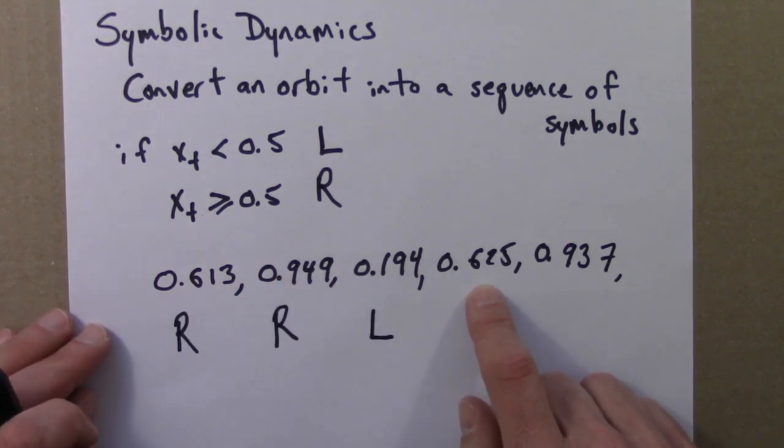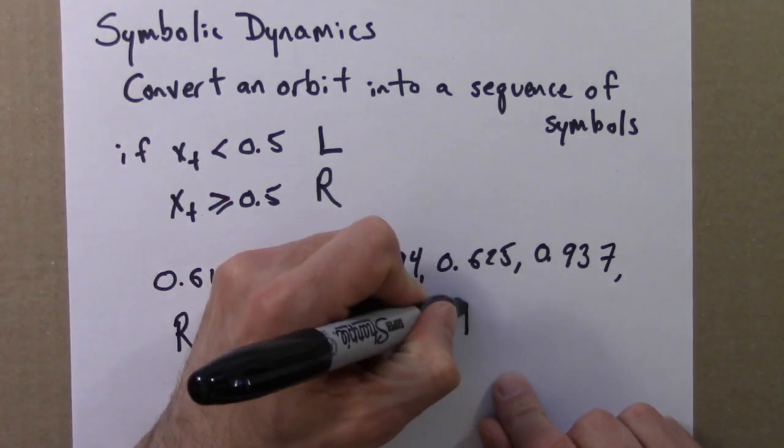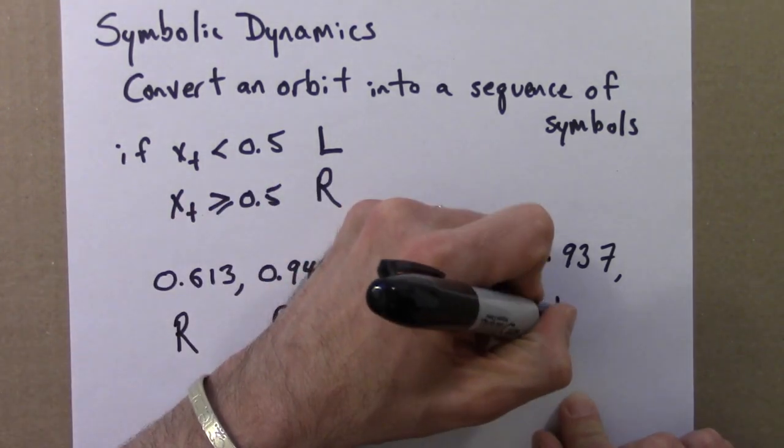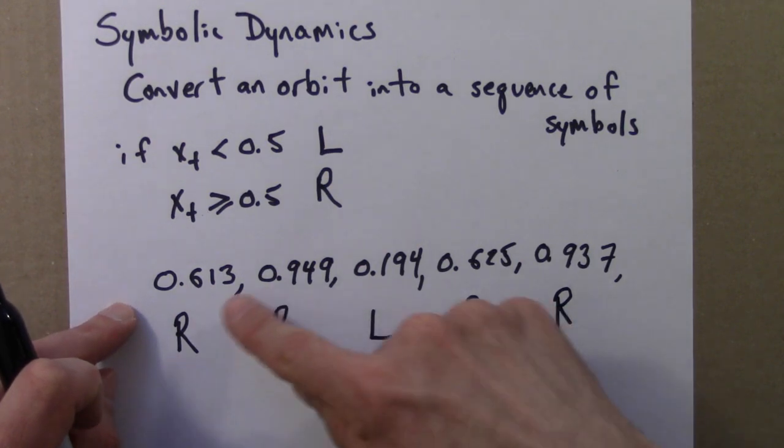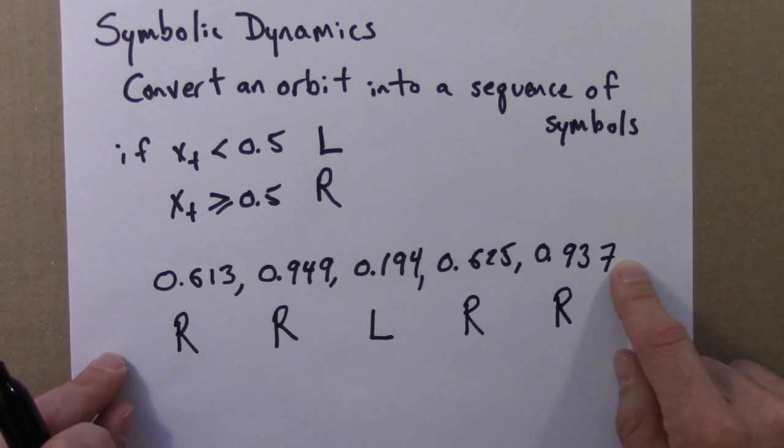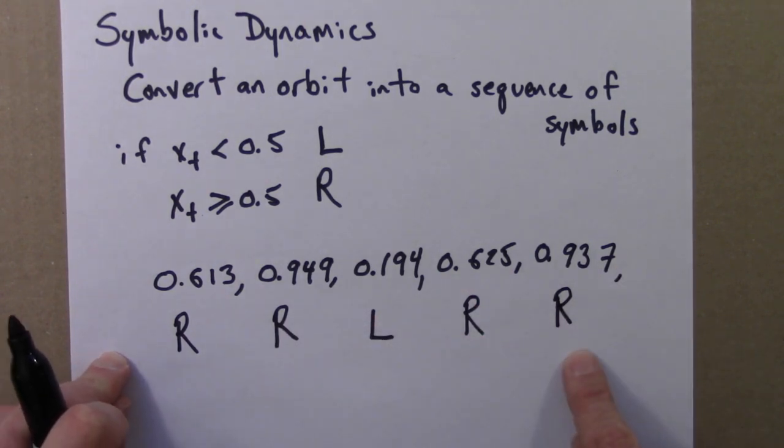0.625, that's greater than a half, that's an R. The idea is that I can take any itinerary, any orbit, a sequence of numbers between 0 and 1, and convert that into a sequence of symbols, R, R, L, R, R, in this case.